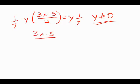Then I get 3x minus 5 over 2 equals 1. Multiply both sides by 2 now to clear the fraction. 3x minus 5 equals 2.